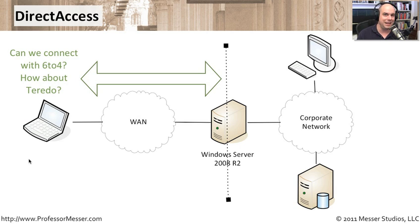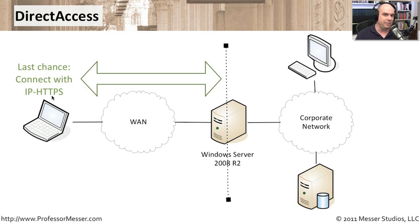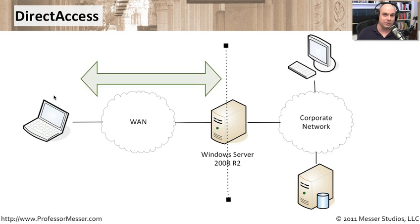In most cases you won't have a pure IPv6 connection at a coffee shop, so it tries to connect with some tunneling technologies — it tries to connect with 6-to-4, and tries to connect using Teredo. We covered those IPv6 communication methods in a previous video. It goes through a couple of different processes to see if it can communicate back to Windows Server 2008 R2. As a last resort, if it can't do any of those, it encapsulates IPv6 within IPv4 sent via an encrypted HTTPS connection — that's called IP-HTTPS — and one of those methods is going to work.